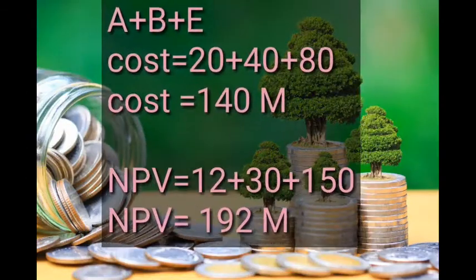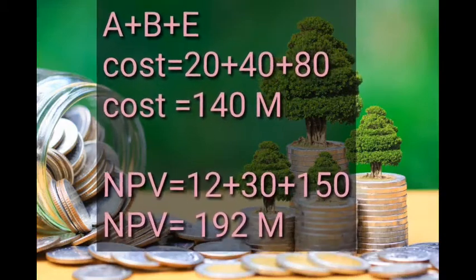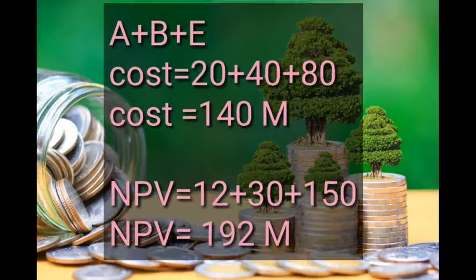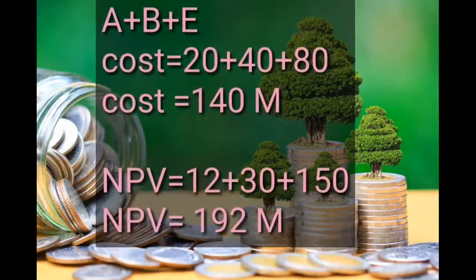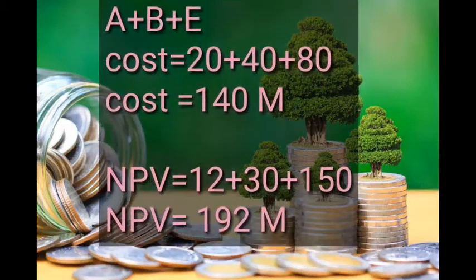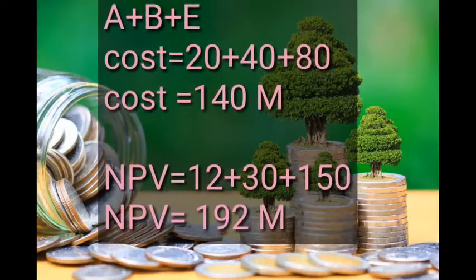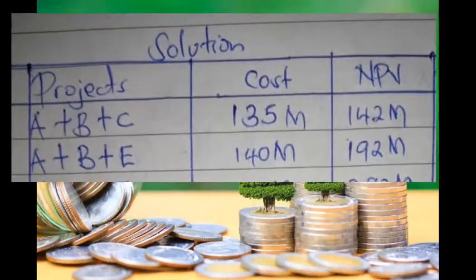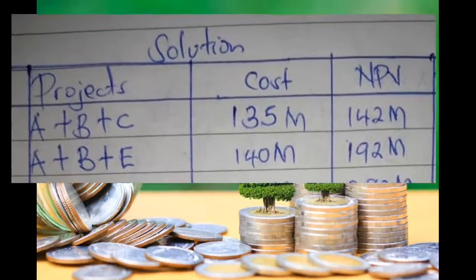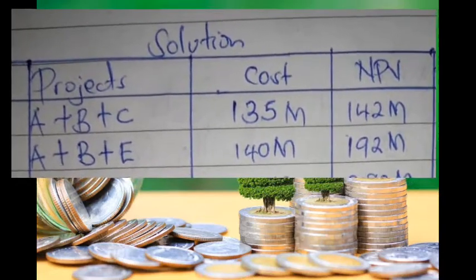Next, we try the combination A+B+E. The cost of A is 20, B is 40, and E is 80, giving a total cost of 140 million. Our overall budget is 200 million. Adding the NPVs — 12 + 30 + 150 — gives a total NPV of 192 million. We record this: projects A+B+E, total cost 140M, total NPV 192M. It's not the best option, so we try another combination.